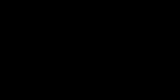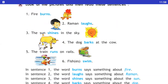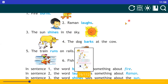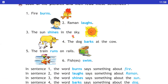Let's start the chapter now. First sentence is: fire burns. Burns is verb. Raman laughs — laughs is verb. The sun shines in the sky — shine is the verb.